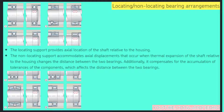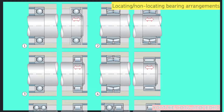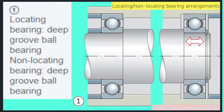Here we have eight examples of this locating and non-locating bearing arrangement. In the first one, the locating bearing is a deep groove ball bearing.